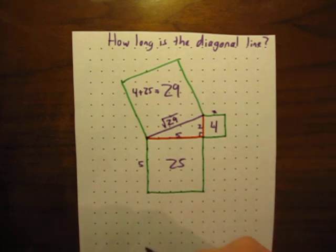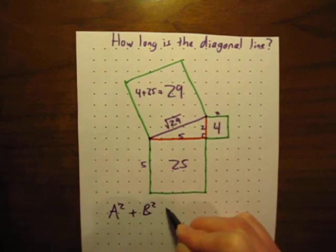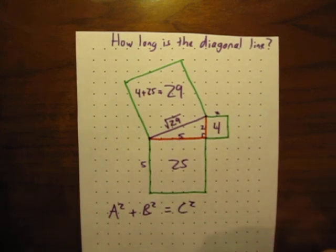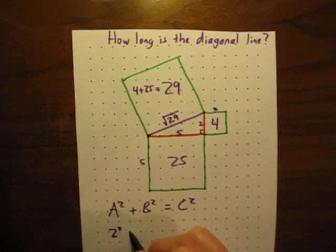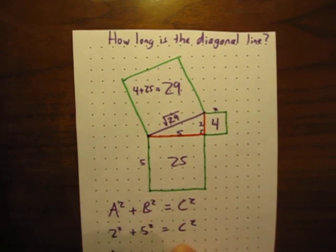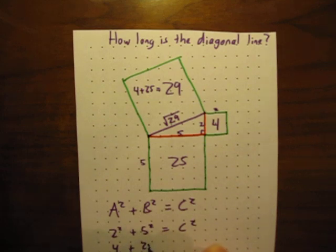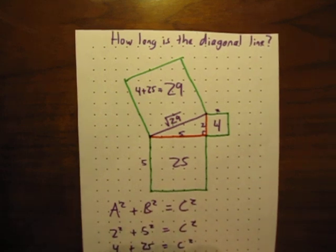We could use the formula a squared plus b squared equals c squared. And we could also use that to plug numbers in. We could say 2 squared plus 5 squared is equal to c squared. Or 4 plus 25 is equal to c squared. Or 29 is equal to c squared.